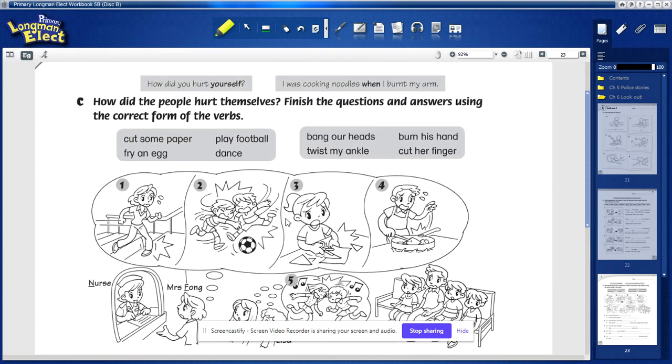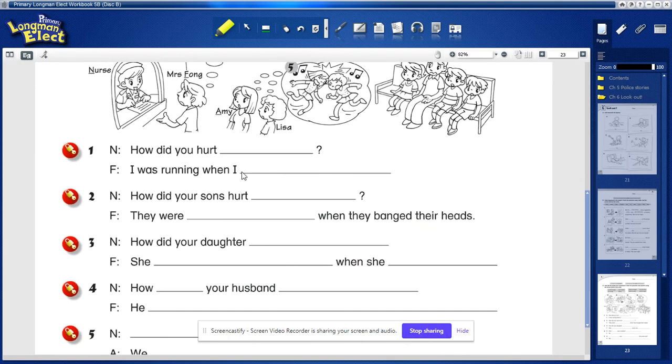Finally, I just want to read out the words here with you once. Cut some paper, play football, fry an egg, dance, bang our heads, banging the head. Twist my ankle. Here, twist her ankle, burn his hands, and cut her finger. Okay, so go ahead to finish this page.